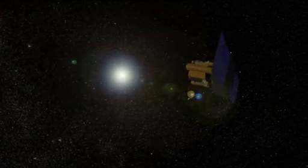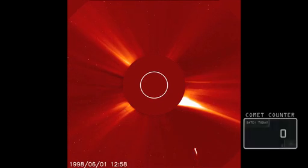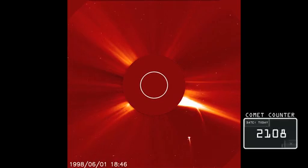Since the joint ESA-NASA mission SOHO launched in 1995, it has shown us thousands more comets than any tool before. To date, it has found 2,387 comets.